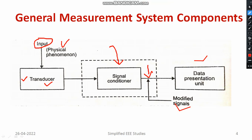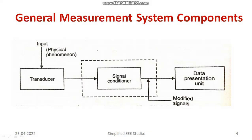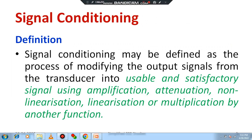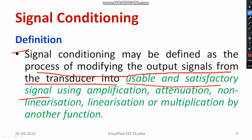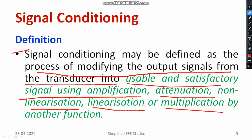This block diagram is very important. Without a signal conditioning device, we cannot directly connect to the data presentation unit. A signal conditioning device may be defined as the process of modifying the output signal from the transducer into a usable and satisfactory signal using amplification, attenuation, linearization, non-linearization, multiplication, scaling, or whatever function is required.